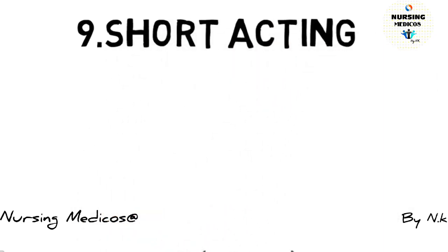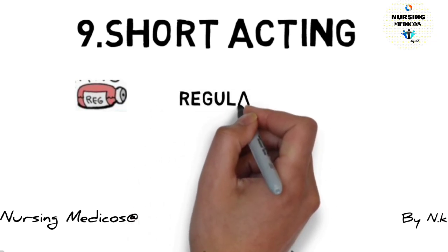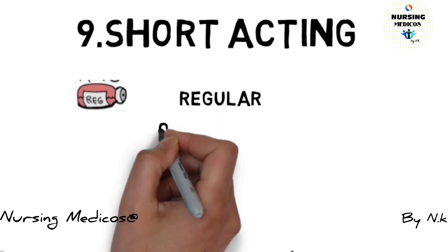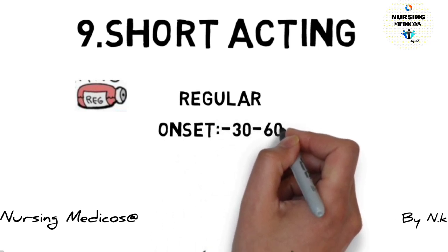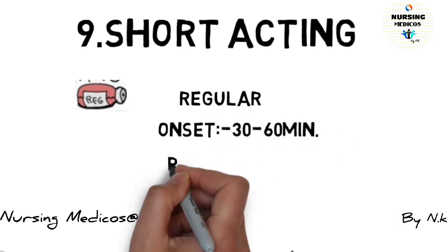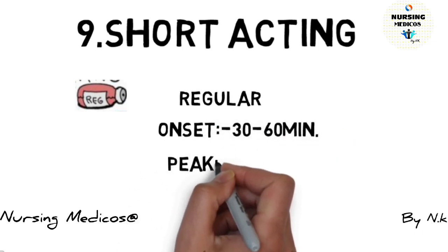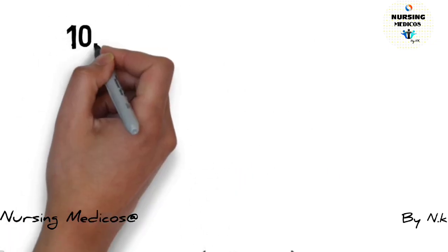Ninth one is short acting insulin, that is regular insulin. Onset period is 30-60 minutes, and the peak time is 2-4 hours.